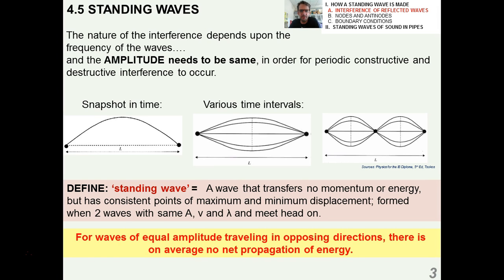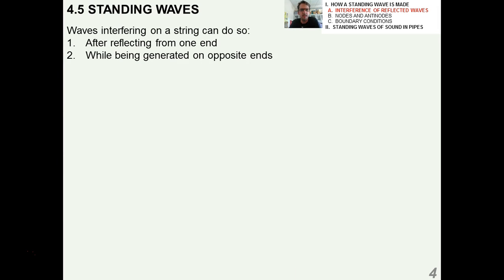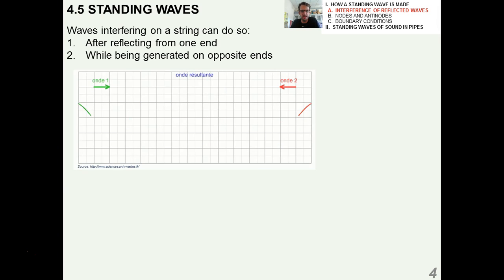For waves of equal amplitude traveling in opposite directions, another way of saying that is there is, on average, no net propagation of energy. Things are just going up and down. Waves can interfere on a string, and they can do so under one of two conditions: number one, after reflecting from one end, and number two, while being generated on opposite ends. The more common situation that we will deal with, especially when we play with slinkies in the classroom, will be number one, reflecting from one end.